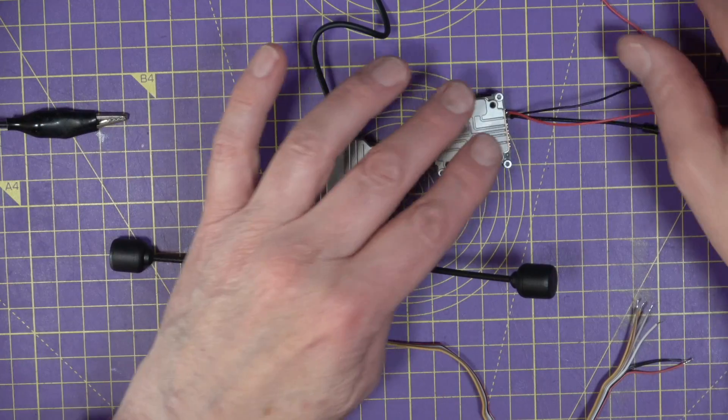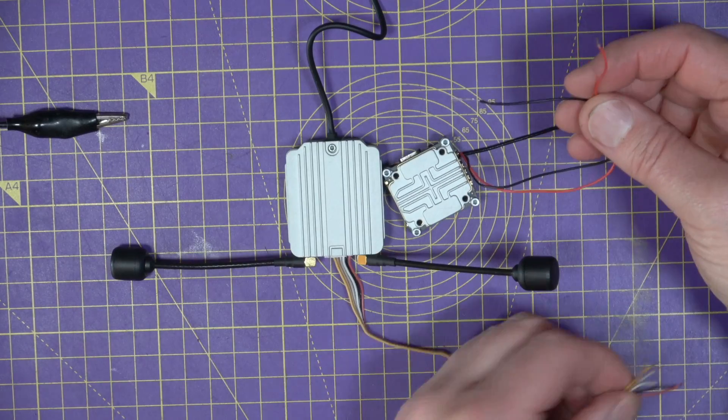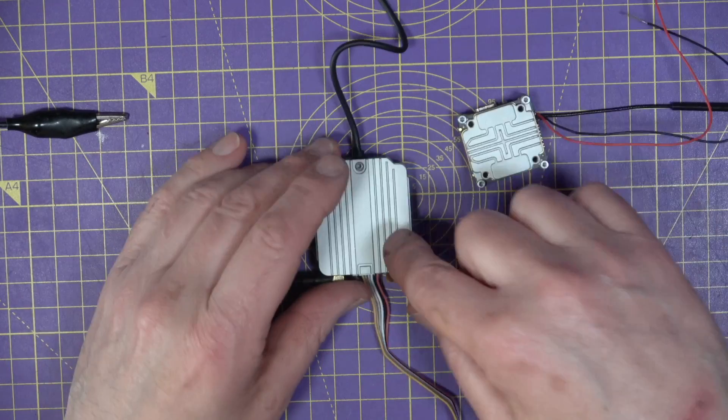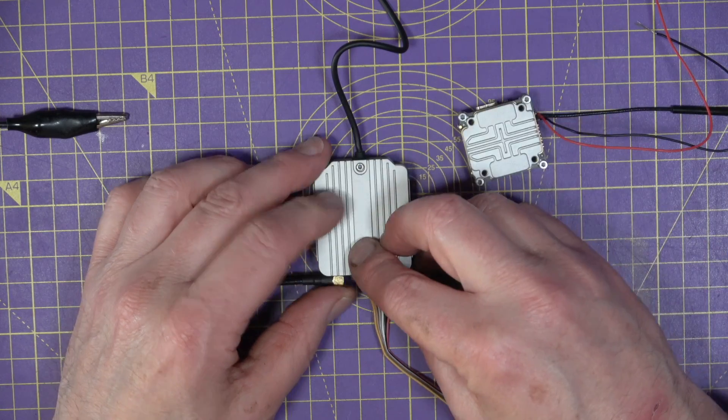All you need to do is apply power to the red and the black. Do remember though that the air unit only supports 4S, so maximum of about 16 volts. You can do the same on the Caddx Vista.